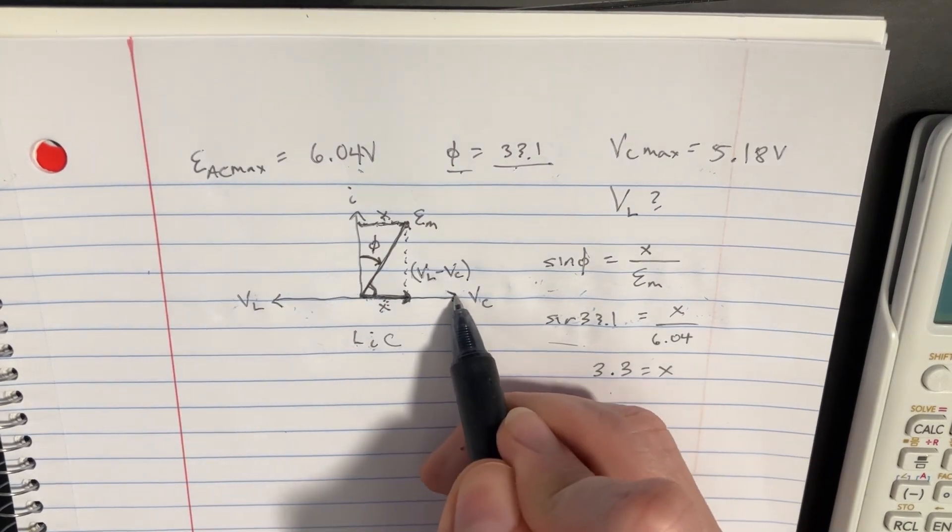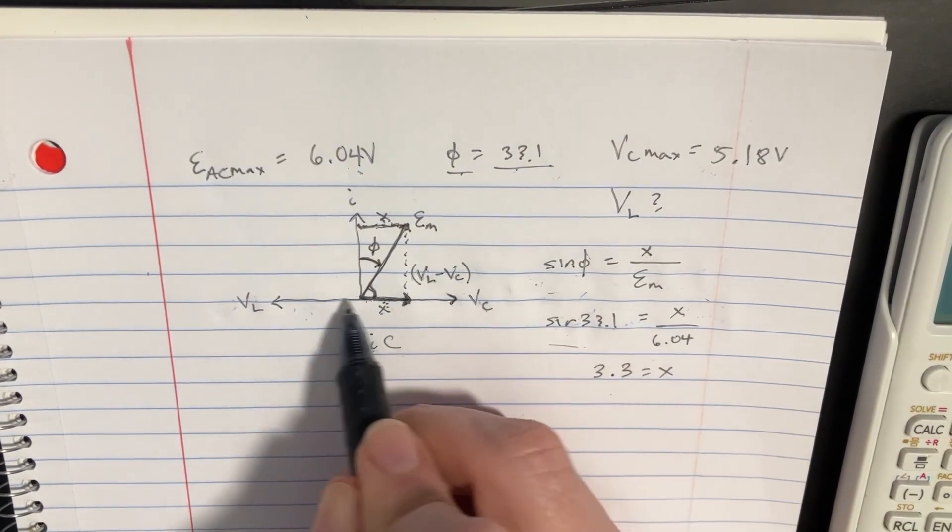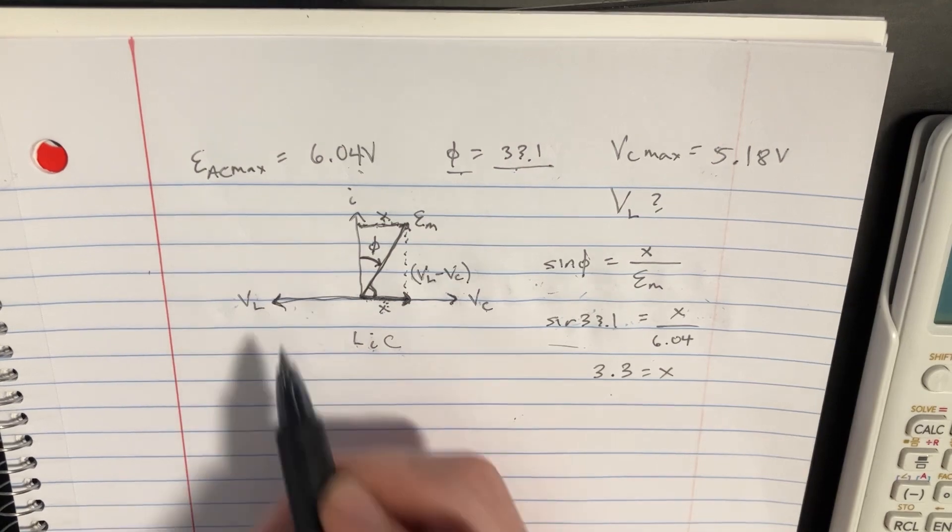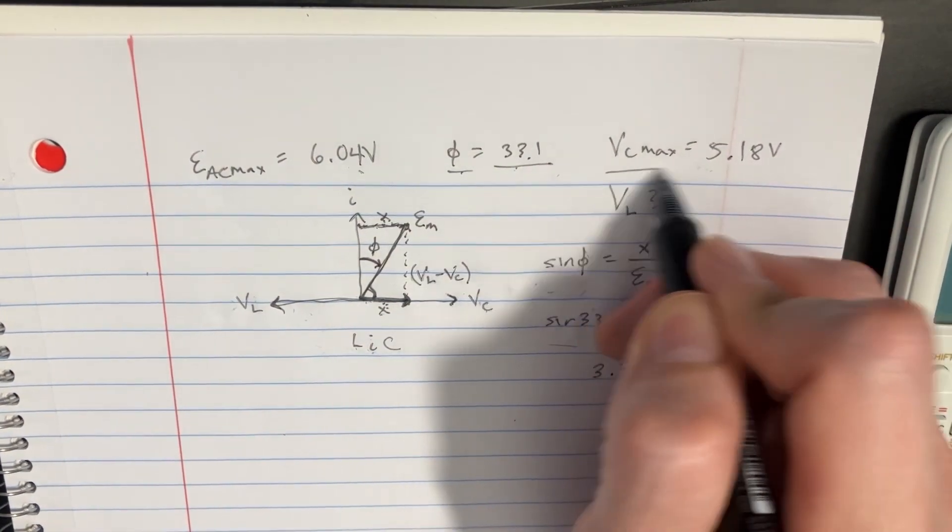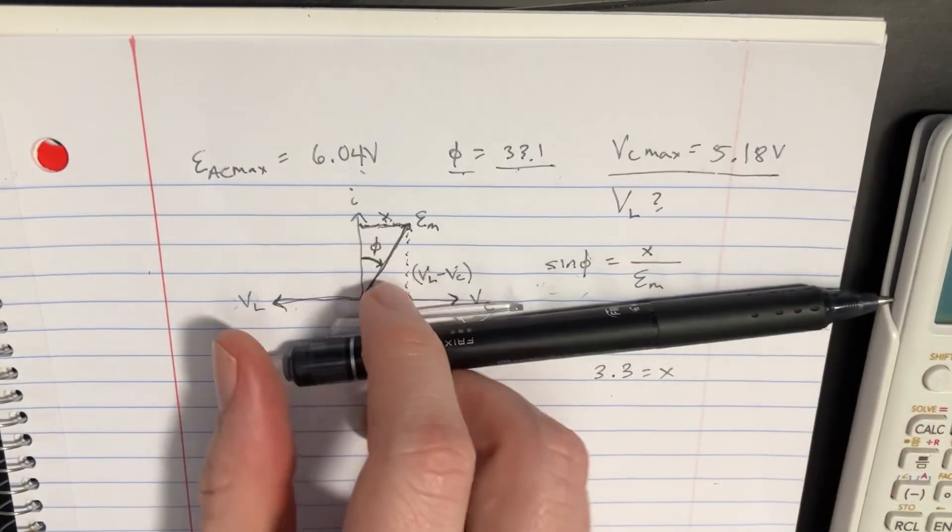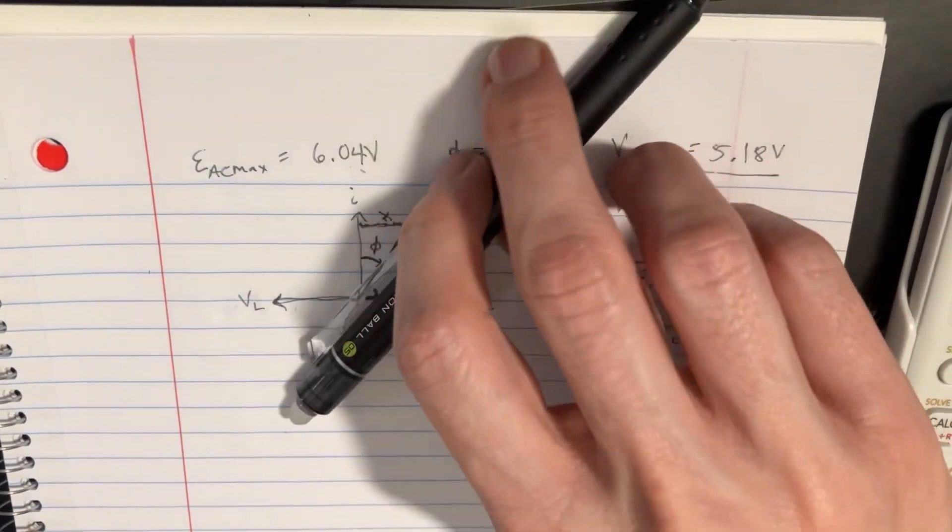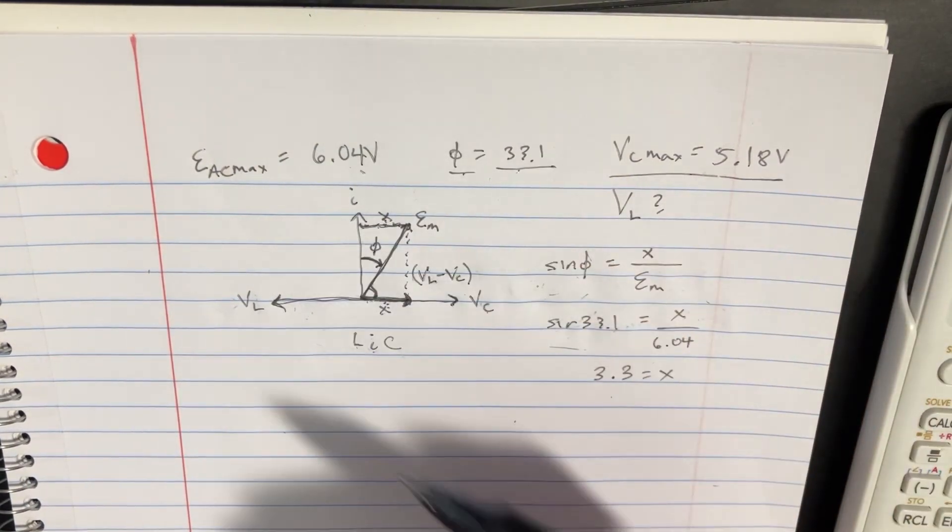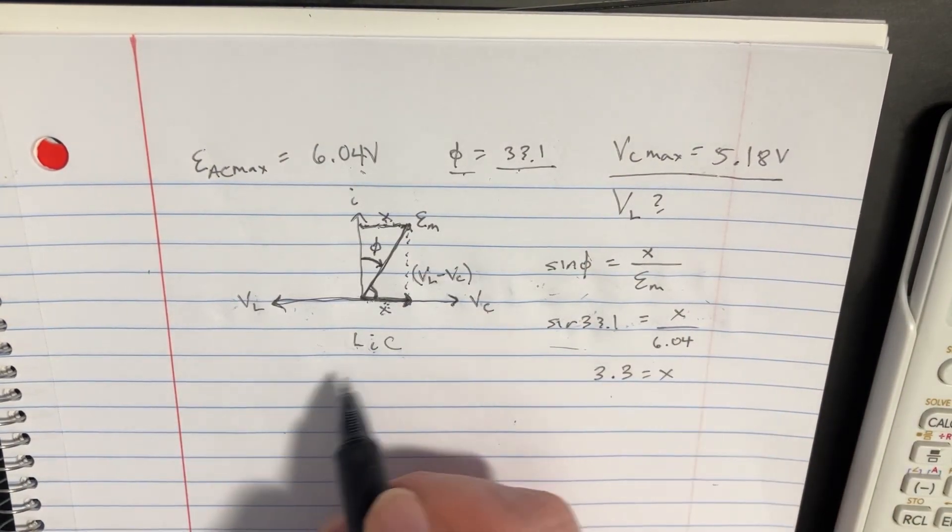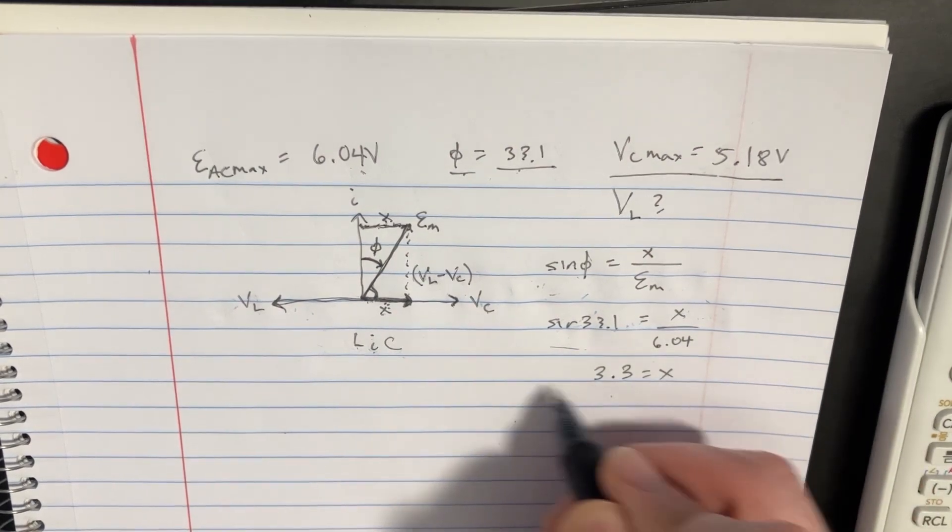And we know VC is going to be positive. And VL is going to be negative because it's on that side. Think about it. They're saying that the Vmax on the capacitor is positive. Therefore, this thing has to be somewhere in the positive distance. And therefore, this L must be on the other side. We know that L is going to be negative.